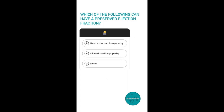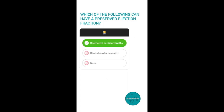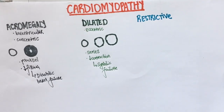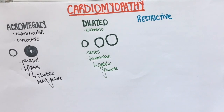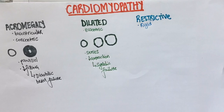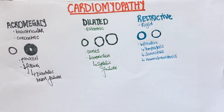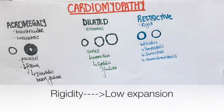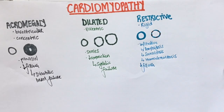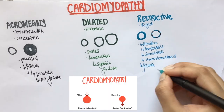Question 2. Which of the following can have a preserved ejection fraction? Option A, restrictive cardiomyopathy; option B, dilated cardiomyopathy; option C, none. The answer is restrictive cardiomyopathy. The issue in restrictive cardiomyopathy is that the ventricular wall is rigid. This can be brought about by different substances being deposited, like in the case of amyloidosis, sarcoidosis, and hemochromatosis. This leads to a decrease in the heart's ability to expand, low filling, and eventually diastolic heart failure.